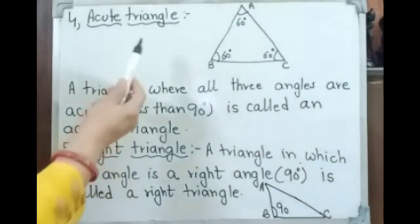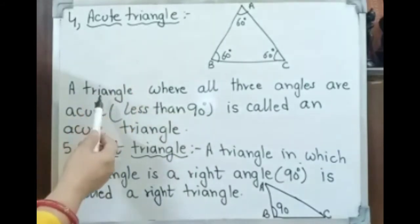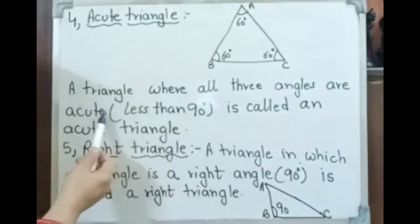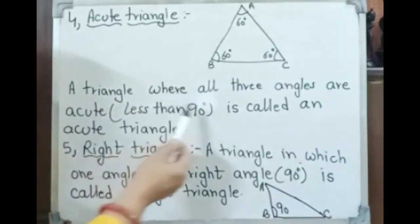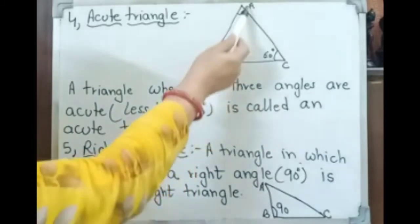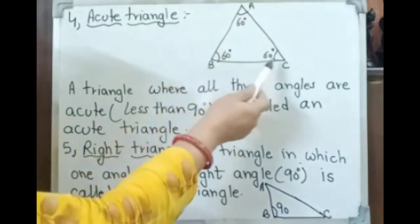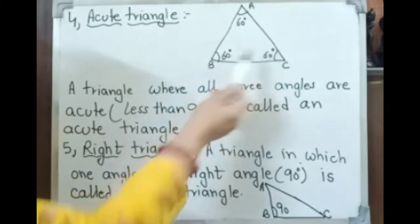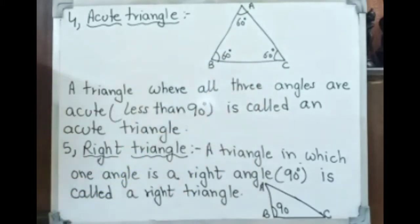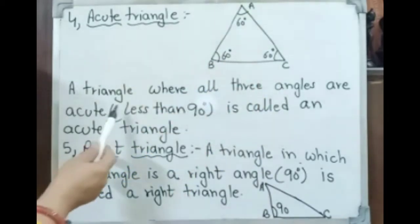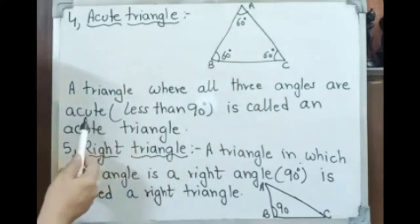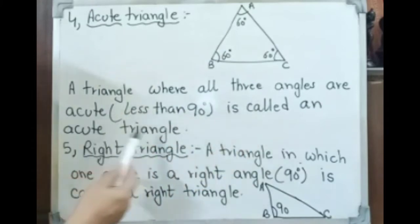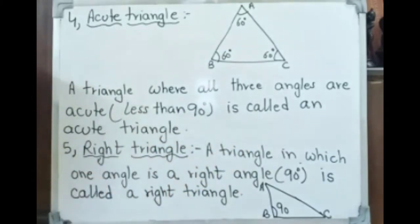Acute triangle — a triangle where all three angles are acute. Acute means less than 90 degrees. Here triangle ABC has all angles equal to 60 degrees, so it is an acute triangle where all three angles are less than 90 degrees.